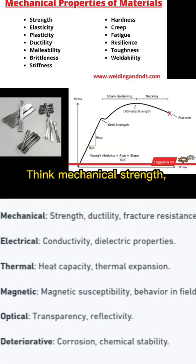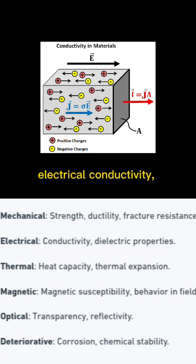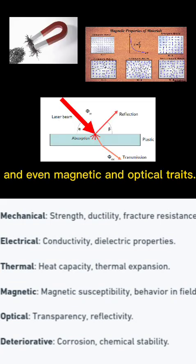Material properties? Think mechanical strength, electrical conductivity, thermal expansion, and even magnetic and optical traits.